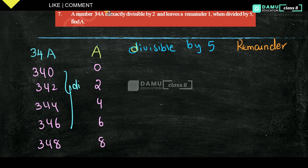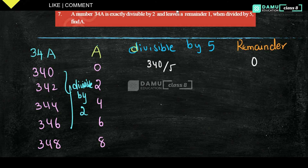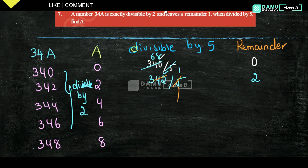Now check each with divisibility by 5 and find which gives remainder 1. For 340: unit digit is 0, so it is exactly divisible by 5 — remainder is 0. For 342 divided by 5: 5 × 68 = 340, so remainder is 2. So neither 340 nor 342 gives remainder 1.